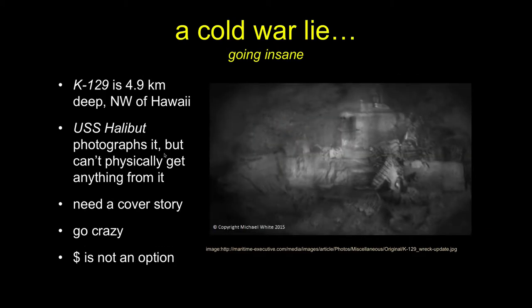K-129 was sitting a bit more than a kilometer deeper than the average depth of the ocean, northwest of Hawaii. We could lower a camera from a submarine and take strobe-lit film pictures of it — lying on its side on the bottom, almost five kilometers straight down. The military wanted to go get the codes, missiles, engine designs, and technology. We know where it is, the Soviets don't. What do you do?